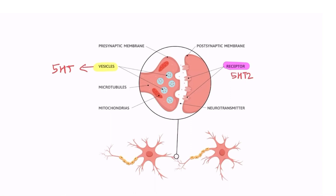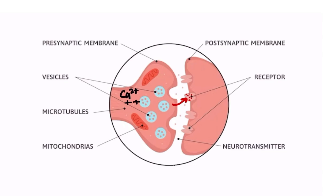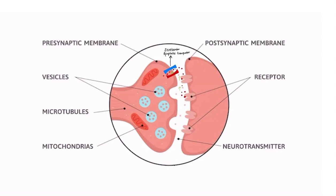This is the synapse, as you can see here. This is the presynaptic side and this is the postsynaptic side. In the presynaptic terminal there are vesicles which contain serotonin. These vesicles are released into the synaptic cleft and they bind to serotonin receptors. Calcium comes in and generates the action potential, which leads to release of these vesicles into the synaptic cleft, releasing serotonin that then binds to its receptor.